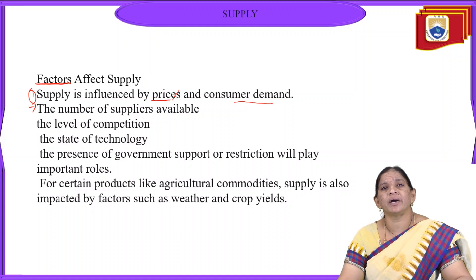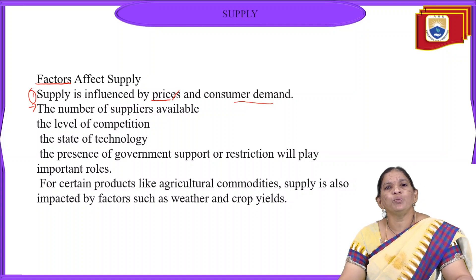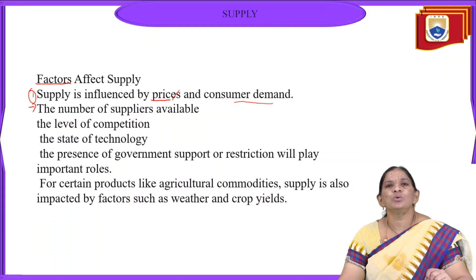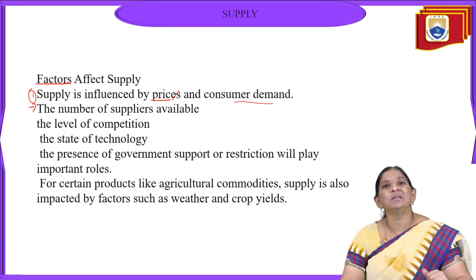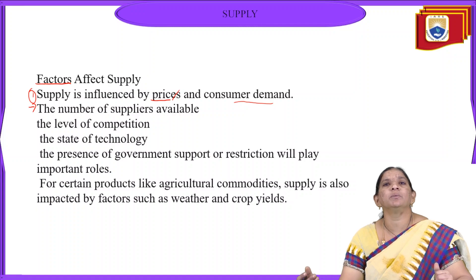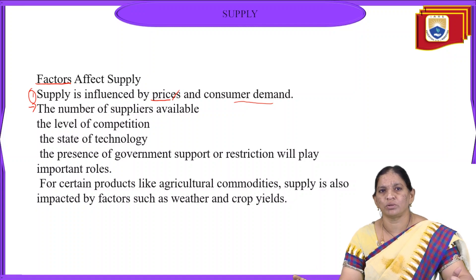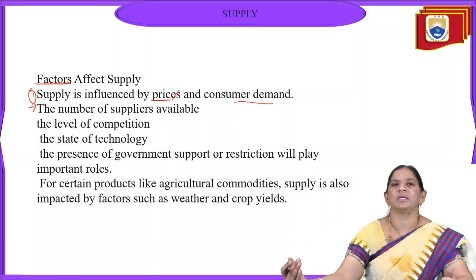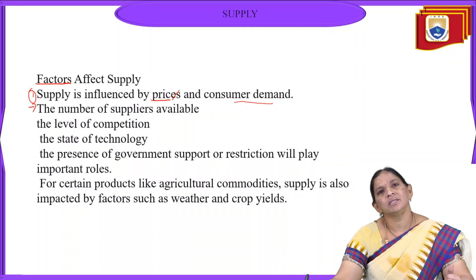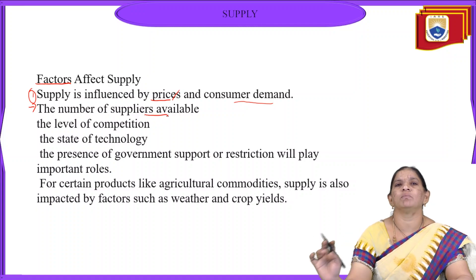The number of suppliers is a considerable factor in supply. If there is only one supplier, as in a monopoly — a single seller — whatever he brings to market is fixed, and prices increase based on consumer demand. But when there are multiple suppliers, the price will not increase as rapidly. The price of goods will increase in a steady manner when multiple suppliers are present, affecting how supply responds in the market.